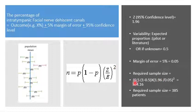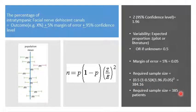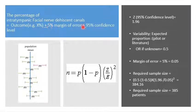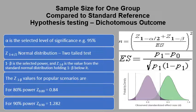This gives the figure 384.16, so you need at least 385 cases, specimens, or patients as the sample size to obtain the required information with a margin of error of 5% and a confidence level of 95%.